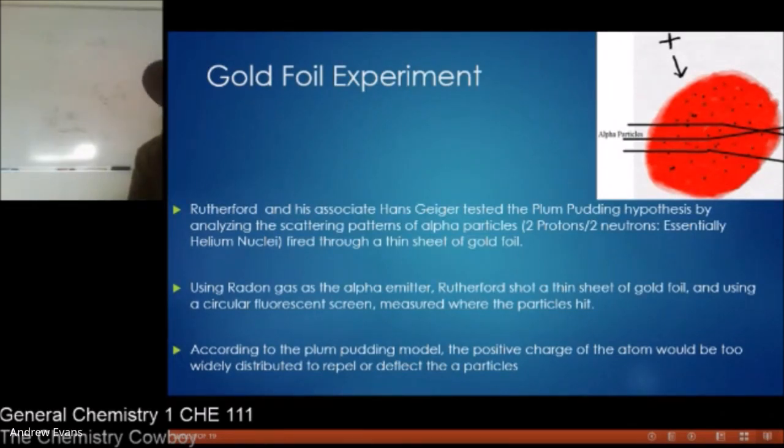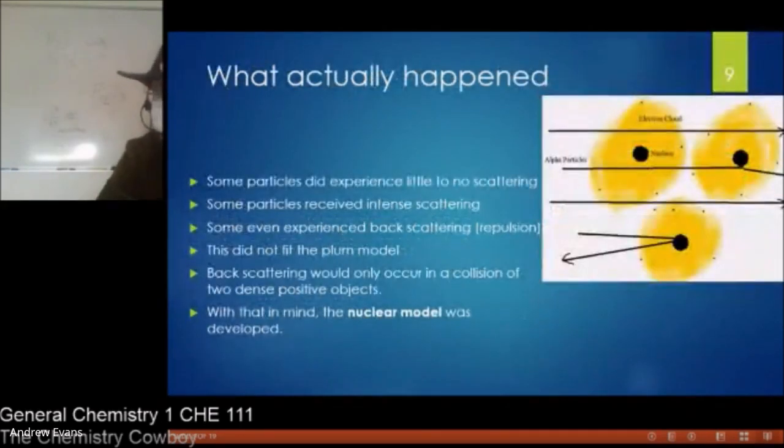Just like if you shot bullets at a pudding, it's going to blow right through its back and go through. It might have a slight amount of deflection as it goes through, but for the most part, it will not stop it. Even though positive will be hitting positive, it's so dispersed, there's not going to have a big problem.